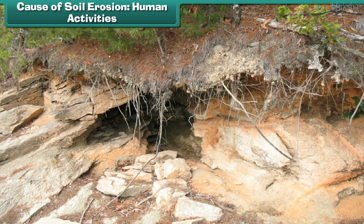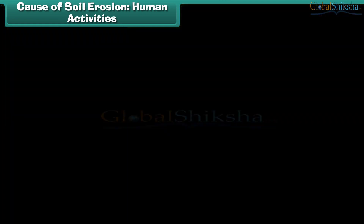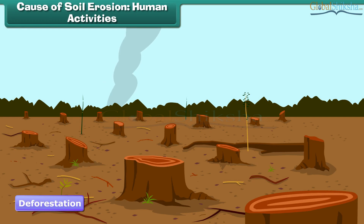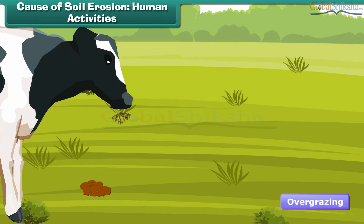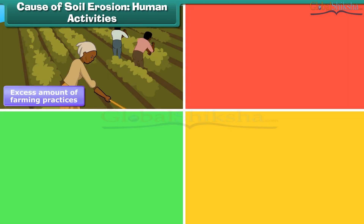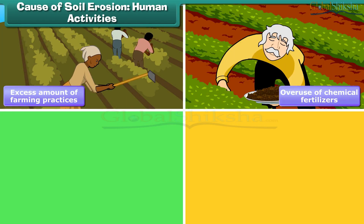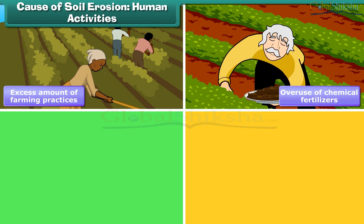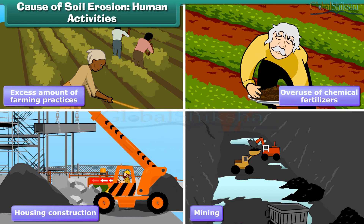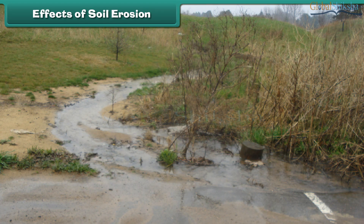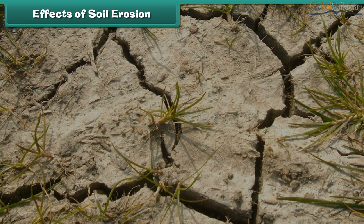Though soil erosion is in itself a naturally occurring process, in many cases it is increased by human activities. Some of these include deforestation, overgrazing by animals, improper or excess farming practices, trail building, overuse of chemical fertilizers, housing construction, mining, and so on.